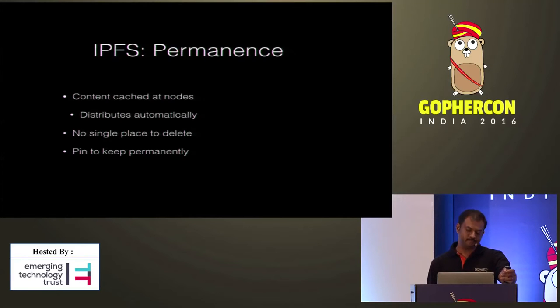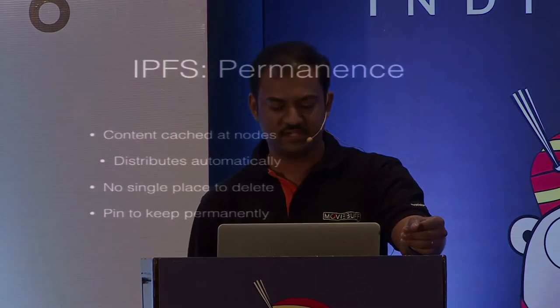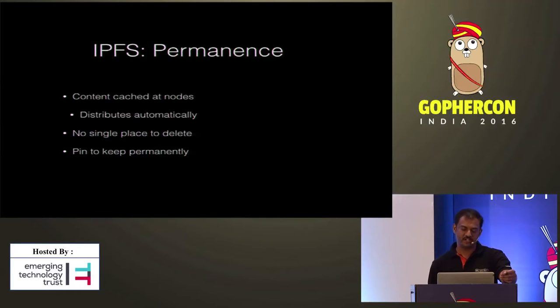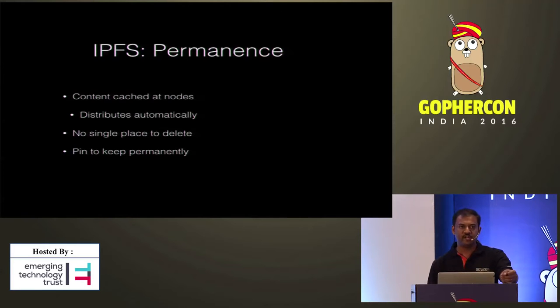In IPFS, contents are cached at the node's local storage whenever they are retrieved from other nodes. This automatically distributes the content to multiple nodes within the network, and there is no single place to destroy the content permanently. IPFS also provides a functionality called pinning, where you can pin your content on local storage to make it available permanently and prevent it from being garbage collected. For example, you could pin all your blog posts on your local storage so that they are available to everyone within the IPFS network.